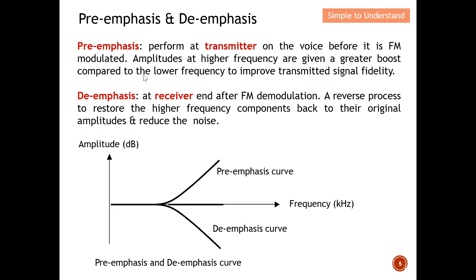To summarize: pre-emphasis happens at the transmitter on the voice signal before FM modulation. Amplitudes at higher frequencies are given a greater boost compared to lower frequencies to improve the transmitted signal. De-emphasis happens at the receiver as the reverse process, restoring higher frequency components back to their original amplitude and reducing noise.